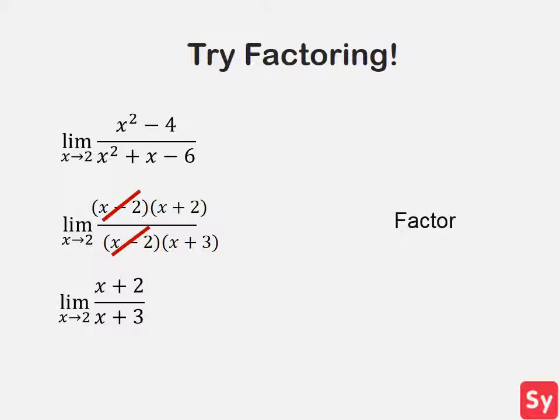Now we can give substitution another try. We substitute 2 in for x and get 2 plus 2 over 2 plus 3. This simplifies to 4 fifths, which is our answer.